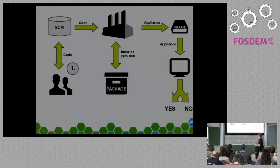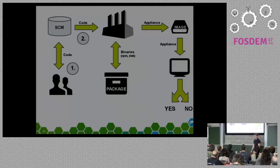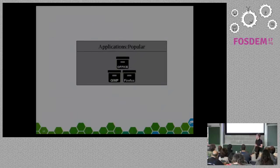So the first step is how do you get your code into the repository. You all work in free software development, so I will leave out this step — you all know how to get code into your GitHub or Git repository. The next step is how do we get the code from the repository to the build service. In the build service, everything is structured as follows.